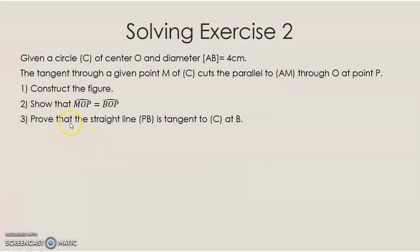The second part: prove that the straight line PB is tangent to circle C at B.